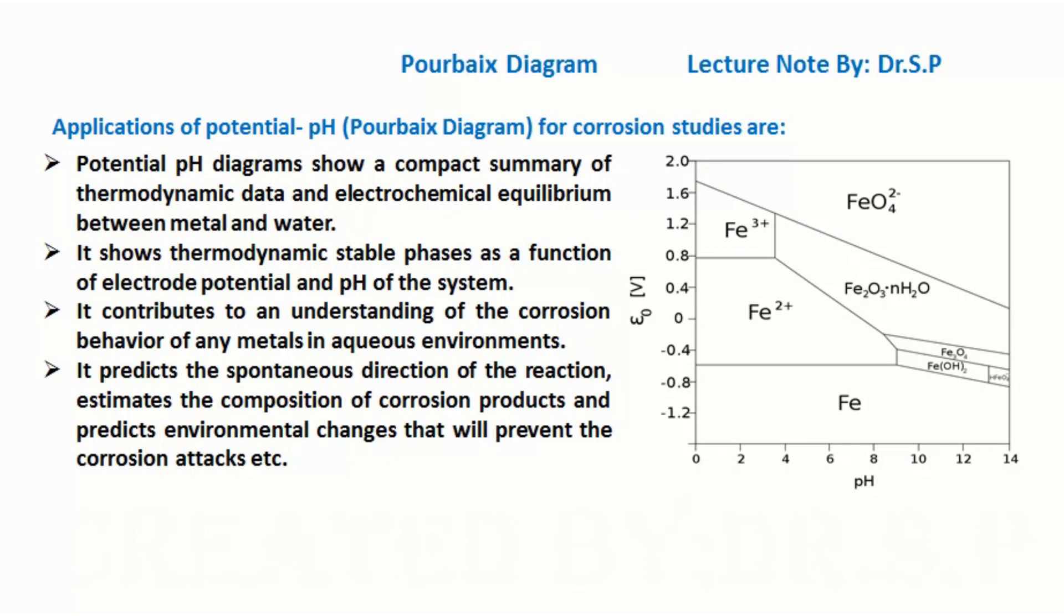Applications of potential-pH diagram (Pourbaix diagram) for corrosion studies are: Potential pH diagrams show a compact summary of thermodynamic data and electrochemical equilibrium between metal and water.